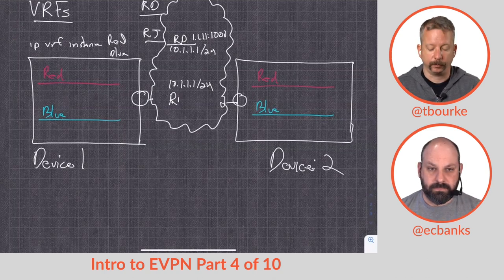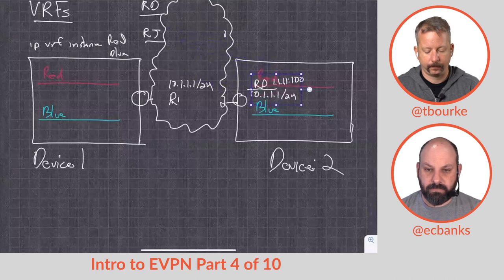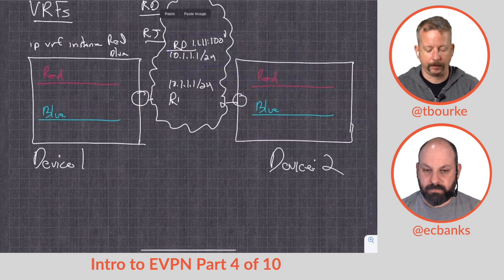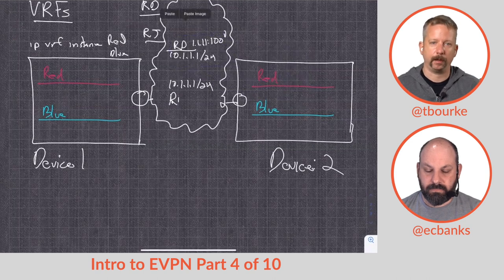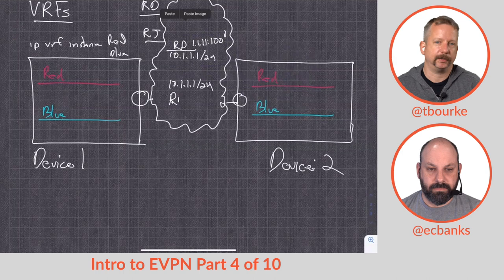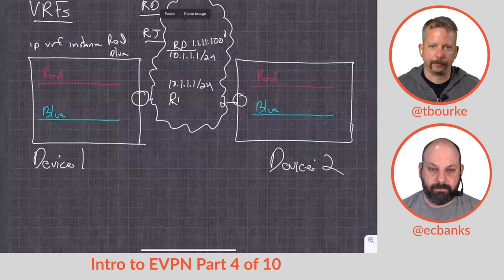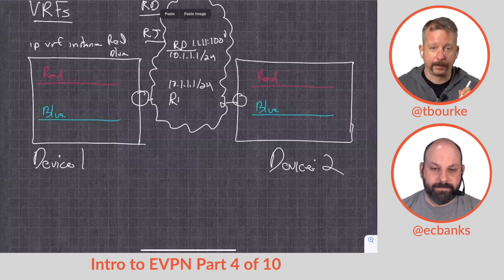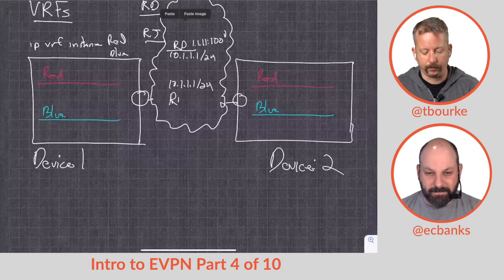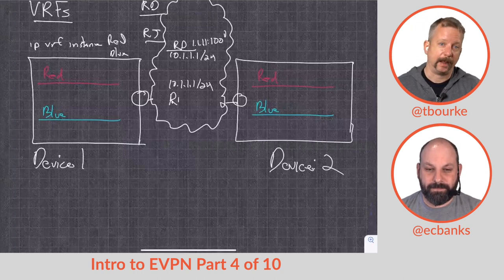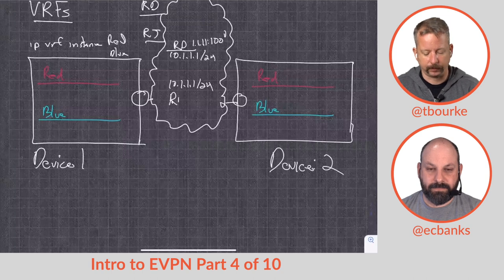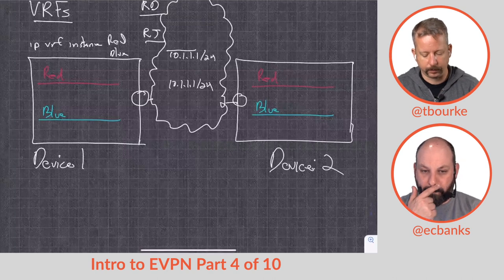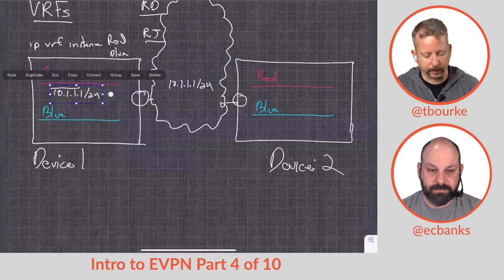So it's got a route distinguisher, and it might be something like we'll use the IP address of maybe loopback zero and then something else as in an AS number, but some metadata that goes along with the route so that when it moves to a new device, the new device knows, oh this belongs to this VRF. Right. And the route distinguisher doesn't do anything else other than make it a unique route in the routing table. That's all it does. It doesn't determine where we send anything or where anything goes or where the route is accepted or not accepted or what VRF the route is put into. All it does is just make it unique in the routing table.